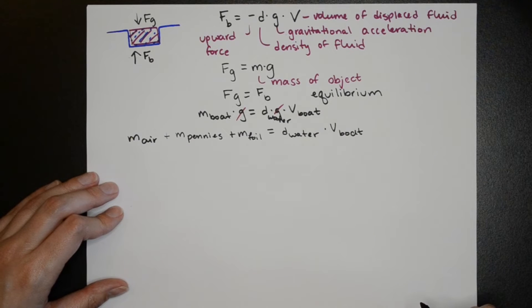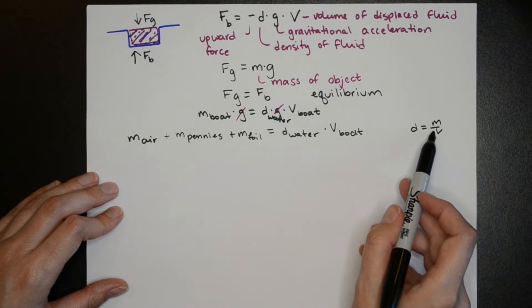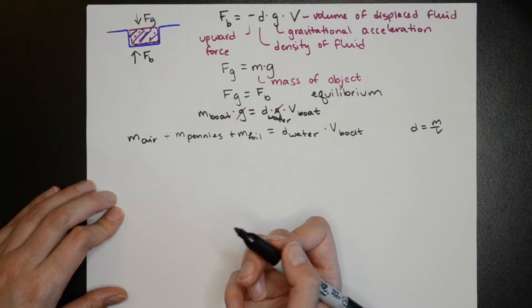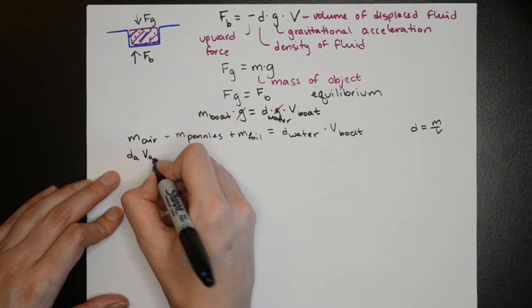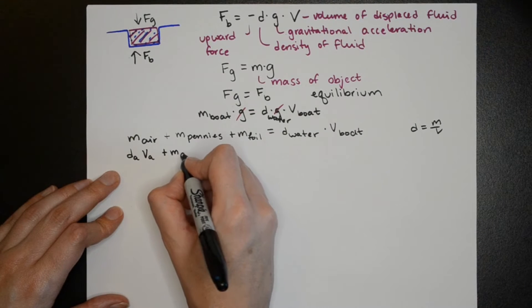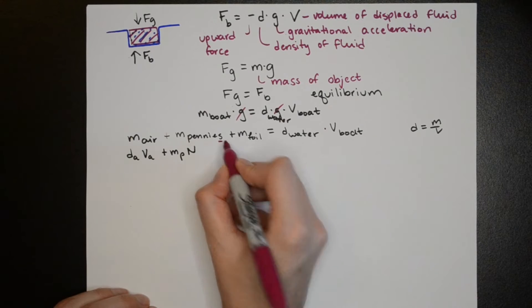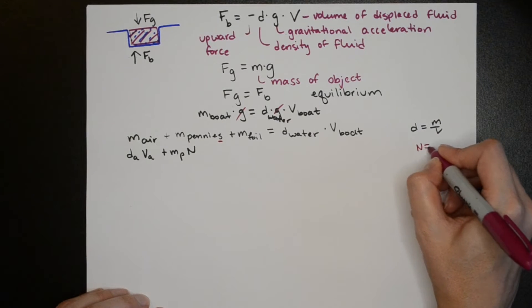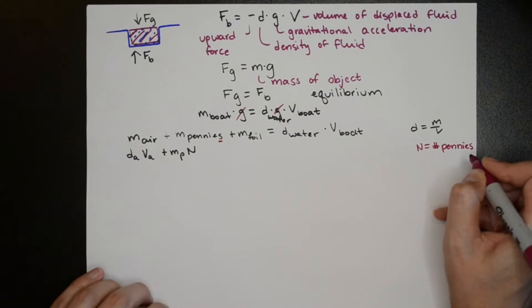Then we can redefine mass in terms of density. So we know that density equals mass divided by volume and we can rewrite the left side of the equation by substituting density times volume for mass. And for the mass of the pennies we'll define the mass of a single penny and multiply that times capital N which will be the number of pennies.